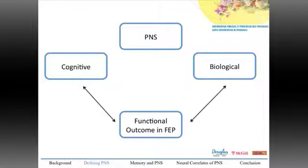Our lab had several objectives regarding persistent negative symptoms. First, we wanted to define this subgroup. What are persistent negative symptoms? How do they contribute to functional outcome in first episode? What are the associations between persistent negative symptoms and cognition? And what are the neural correlates of persistent negative symptoms? There are many studies in chronic schizophrenia, but our interest is in what is happening during first episode psychosis.